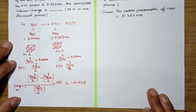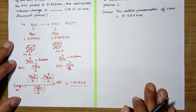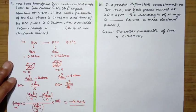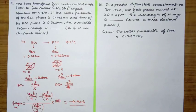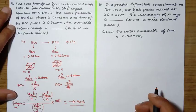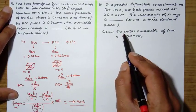The next question is related to diffraction. In a powder diffraction experiment on BCC iron, the first peak occurs at 2θ equal to 68.7 degrees. We have to calculate the wavelength of X-rays to three decimal places, given the lattice parameter is 0.287 nanometer.